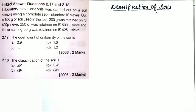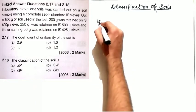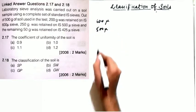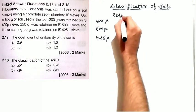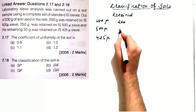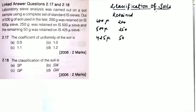The next linked question involves sieve analysis of a 500-gram soil sample using standard IAS sieves: 200 grams retained on 600 micron sieve, 250 grams retained on 500 micron sieve, and the remaining 50 grams retained on 425 micron sieve. The first part asks you to calculate the coefficient of uniformity. Set up a table with sieve sizes, retained weight, cumulative retained, and percentage finer.